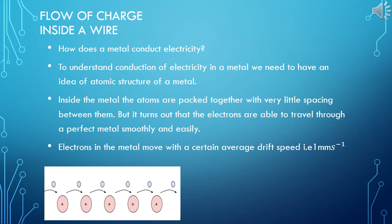Electrons in metal move with a certain average drift speed that is very less, that is one millimeter per second, because in a metal electron moves from one atom to another atom to the next atom. To go from one end to another end it takes a lot of time. If you understand, one millimeter per second means electron moves one millimeter in one second. That is average drift speed of an electron.